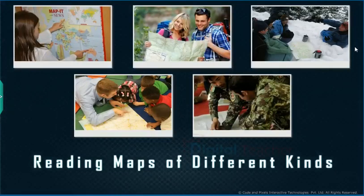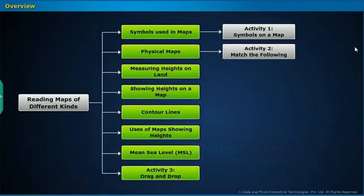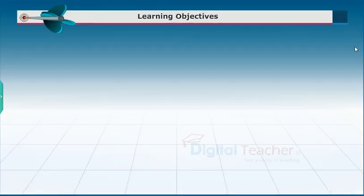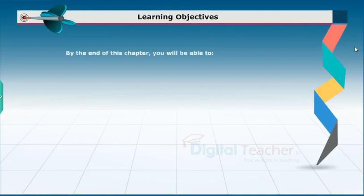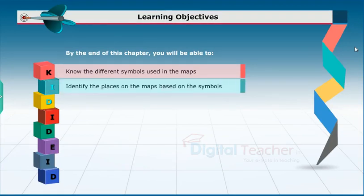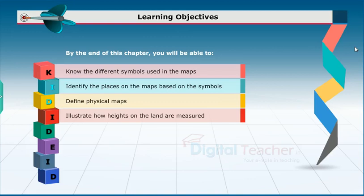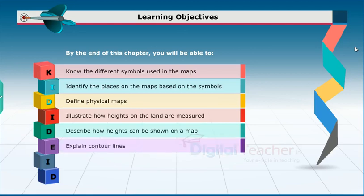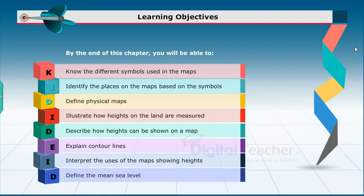Welcome to the chapter 'Reading Maps of Different Kinds.' This slide presents the overview of the chapter learning objectives. By the end of this chapter, you will be able to know the different symbols used in maps, identify places on maps based on symbols, define physical maps, illustrate how heights on land are measured, describe how heights can be shown on a map, explain contour lines, interpret the uses of maps showing heights, and define the mean sea level.